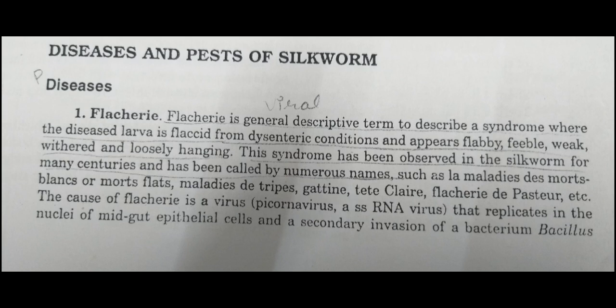Flacherie is generally a viral disease. It is basically a syndrome where the larva of the silkworm changes its shape and appears flaccid, flabby, feeble, weak, withered, and loosely hanging. This syndrome has been observed in silkworms for many centuries and is called by numerous names.